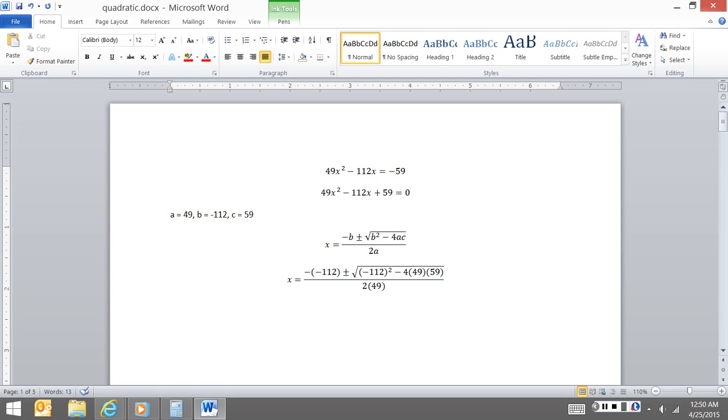Once in this form, then each coefficient becomes my a, b, and c. So a is 49, b is negative 112 because the signs come with it, and finally c is 59. So then I take each of these terms, and I plug them in to this equation.